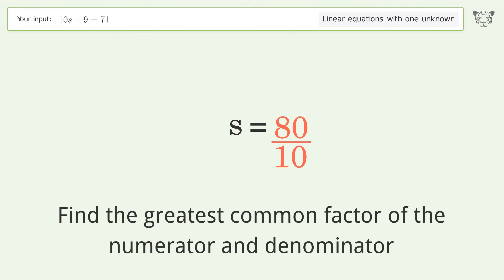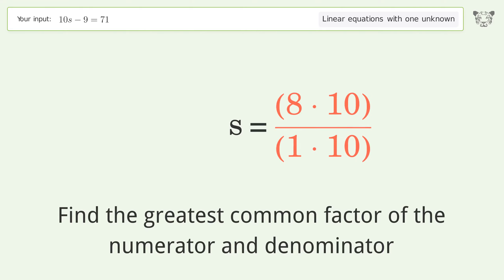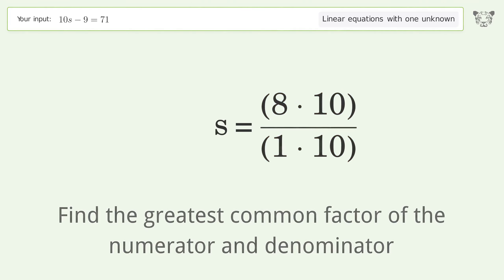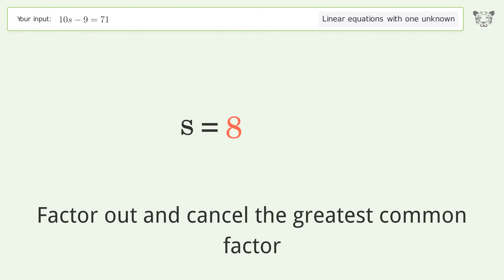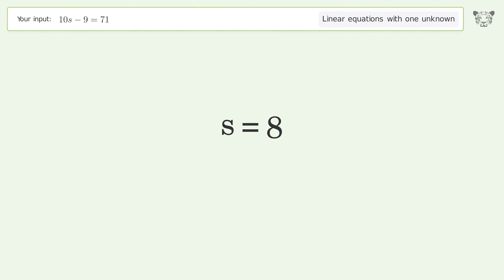Find the greatest common factor of the numerator and denominator, then factor out and cancel the greatest common factor. The final result is s equals 8.